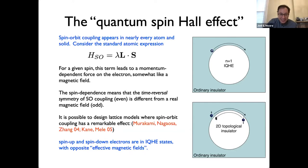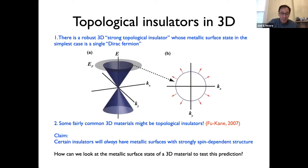Usually when you have a topological invariant in the bulk, there's a metallic state at the boundary — that's what experiments look for. This 2D topological insulator wasn't taken seriously until around 2005, because everyone thought disorder would scatter the left-mover and right-mover at the edge, giving an insulator. But it turns out there is protection only if there is an odd number of edge modes. For this talk I'll focus on the 3D topological insulator and how that leads to understanding the magneto-electric effect.